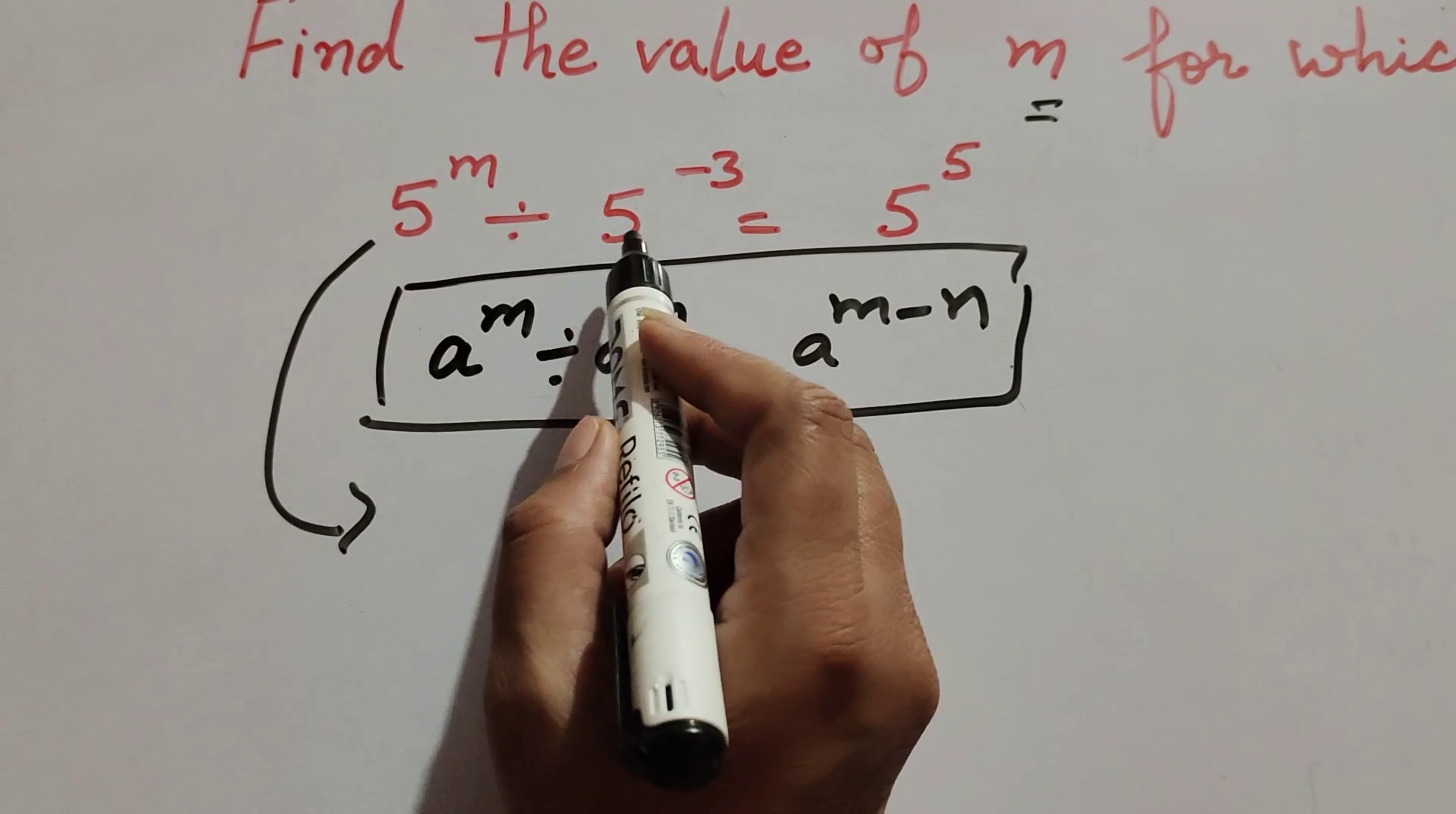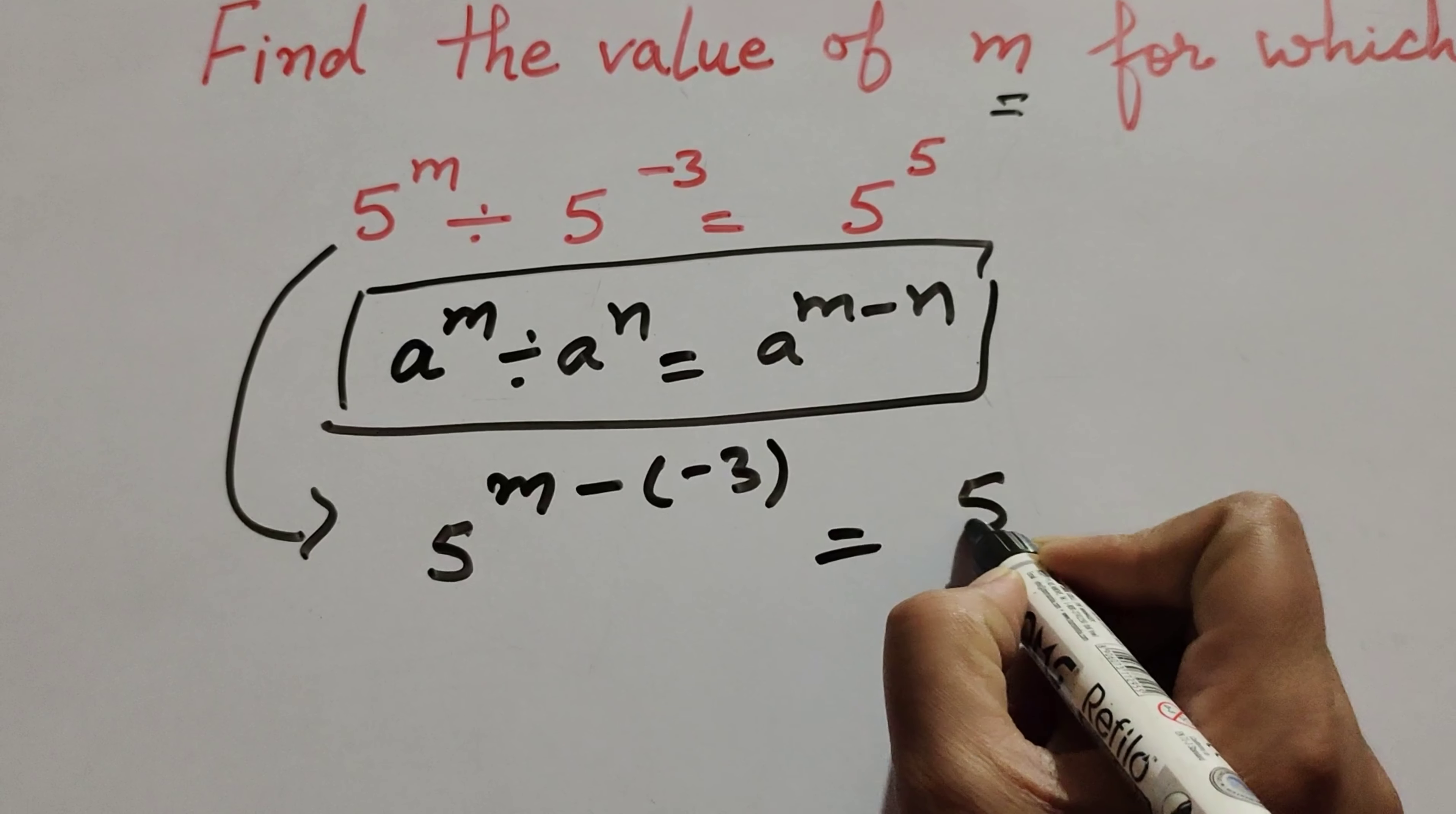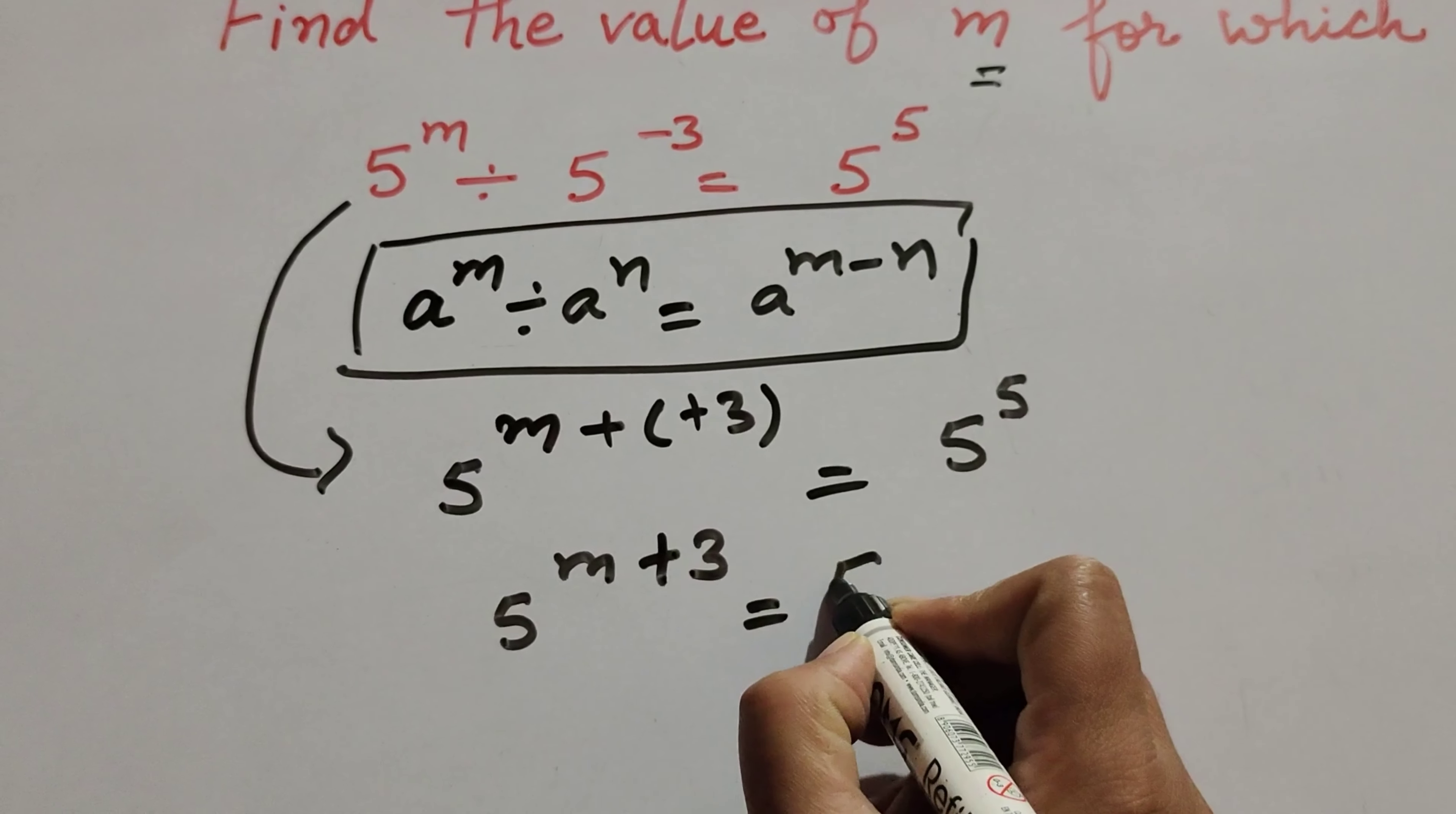We have 5 raised to power (m - n), where n is -3, equal to 5^5. This becomes 5^(m - (-3)). Minus minus becomes plus, so we have 5^(m+3) equals 5^5.